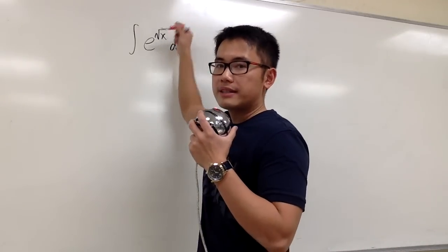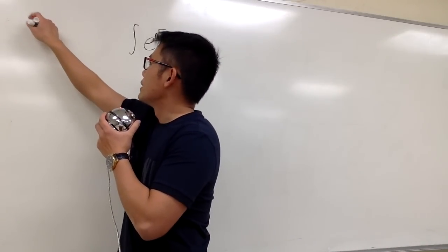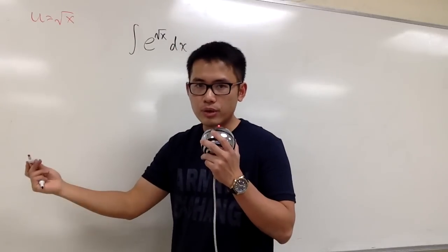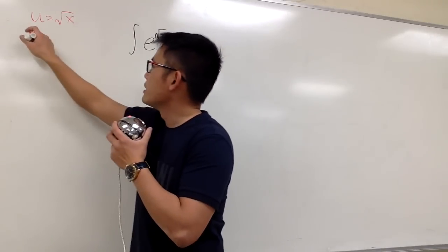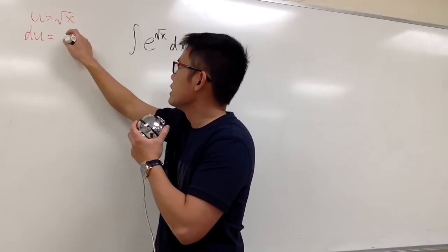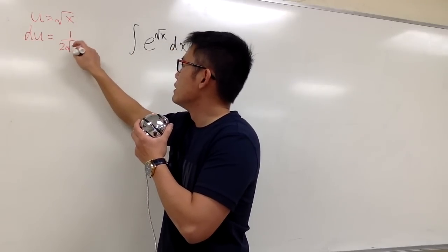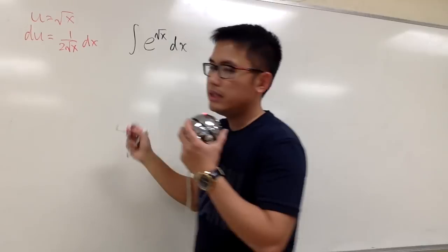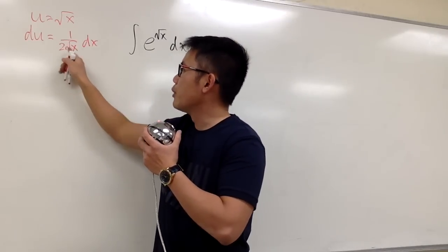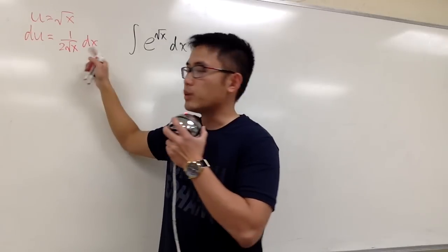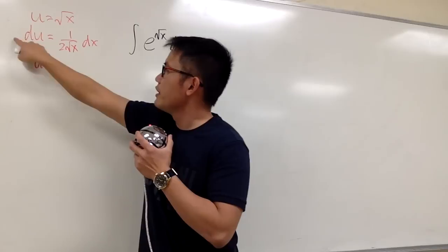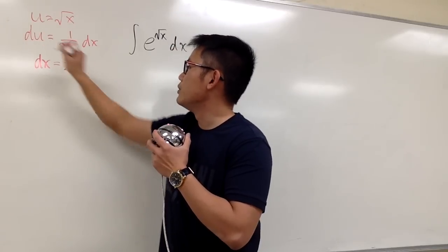Let me set u to be square root of x, so let me write it down right here. I will set u equals to square root of x. And as usual, we'll differentiate both sides, then we get du equals to the derivative of square root of x. It will be 1 over 2 square root of x dx. And then let me isolate the dx, so I will multiply both sides by 2 square root of x. So we get dx equals to 2 square root of x du.